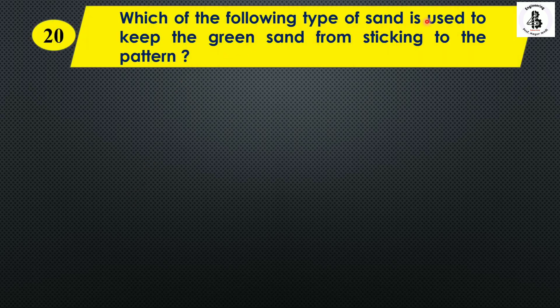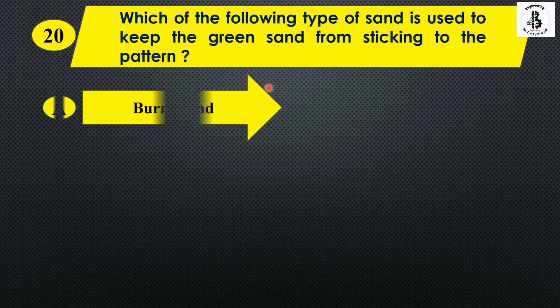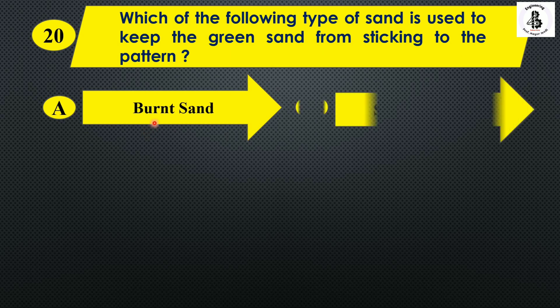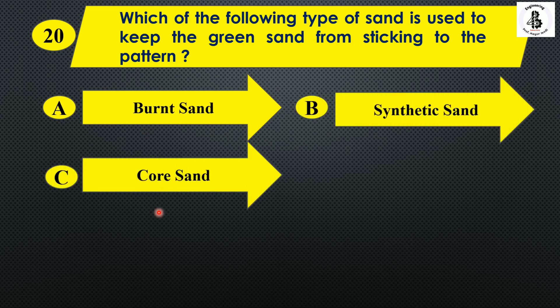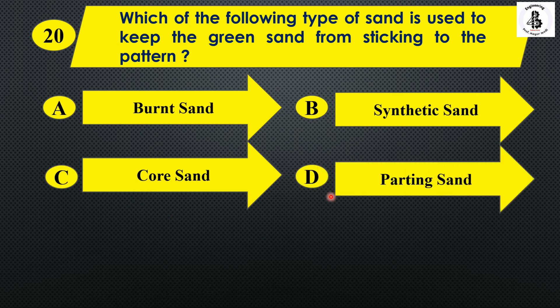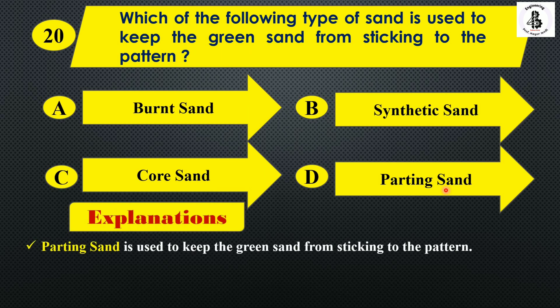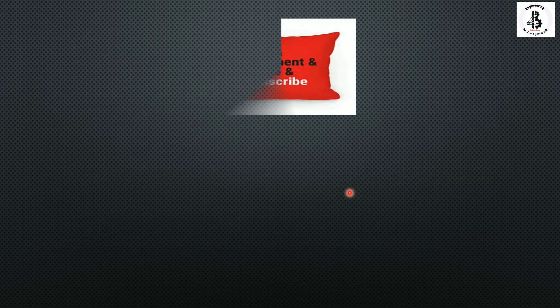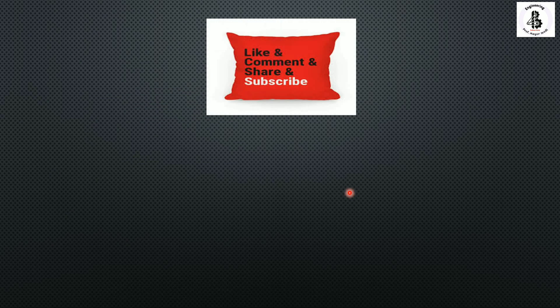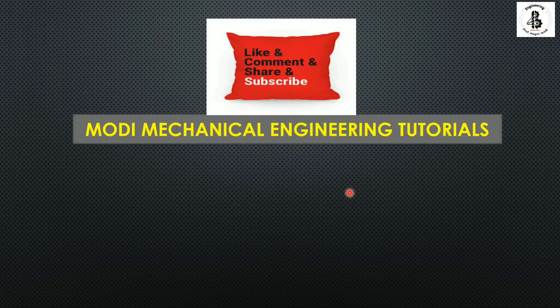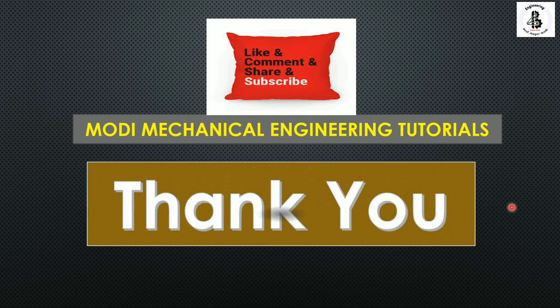The last question: which type of sand is used to keep the green sand from sticking to the pattern — option A: burnt sand; option B: synthetic sand; option C: core sand; option D: parting sand. Parting sand is used to keep green sand from sticking to the patterns in the sand molding process, so the right answer is option D. I hope you understand all the questions — if you like this, please subscribe and share Modi Mechanical Engineering Tutorials. Thank you.